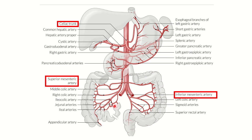Here we can see the whole gastrointestinal system. The celiac trunk supplies from the lower part of the esophagus up to the second part of the duodenum. The superior mesenteric artery supplies from the second part of the duodenum up to the junction of the right two-thirds and left one-third of the transverse colon.